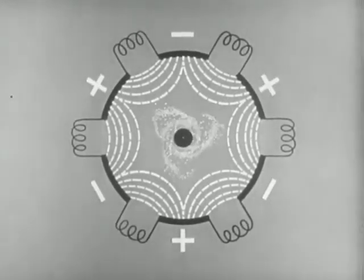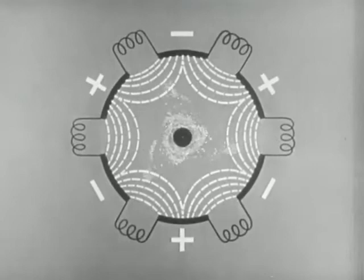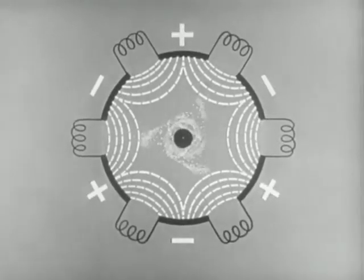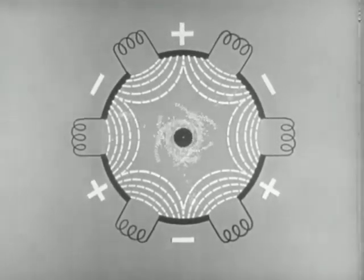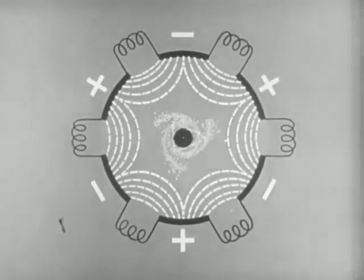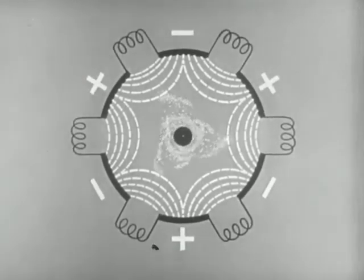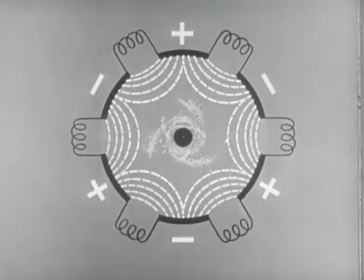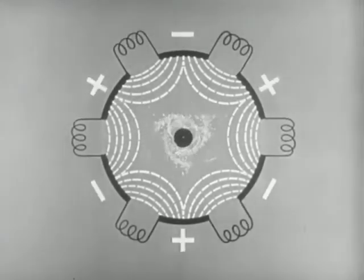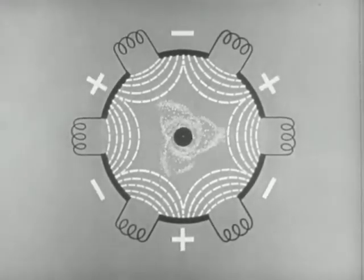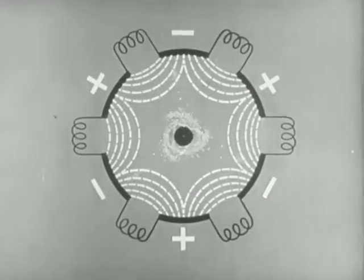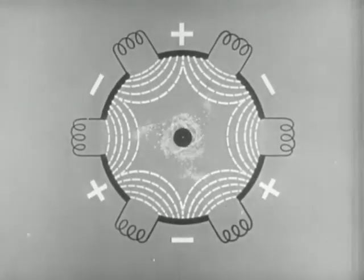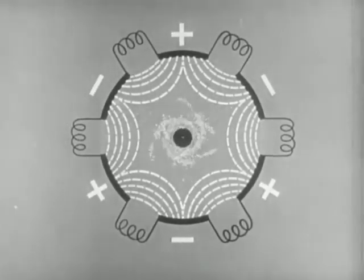The clouds will revolve in the same direction as the individual electrons, always approaching an RF negative segment of the anode. In this way, the kinetic energy which the electrons obtain from the DC potential is given up to the RF field and oscillations are sustained.